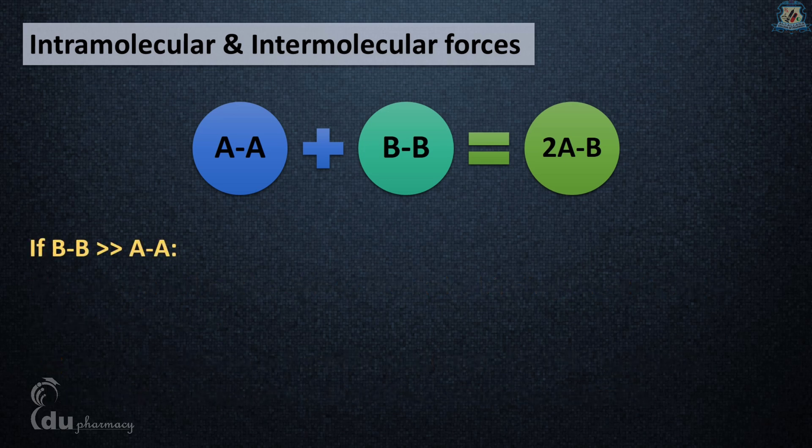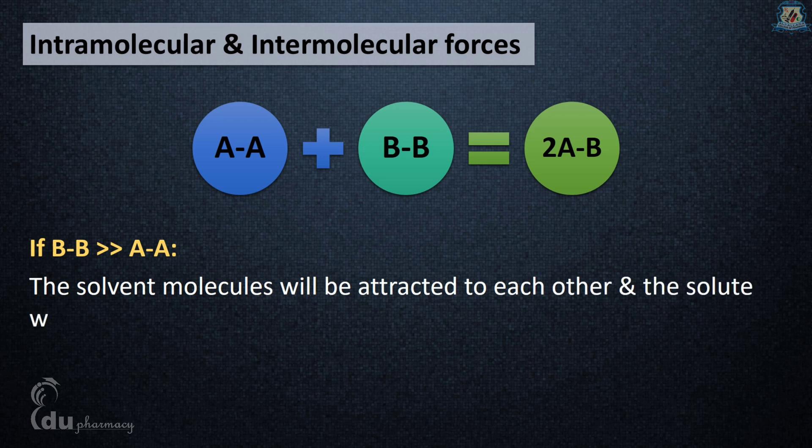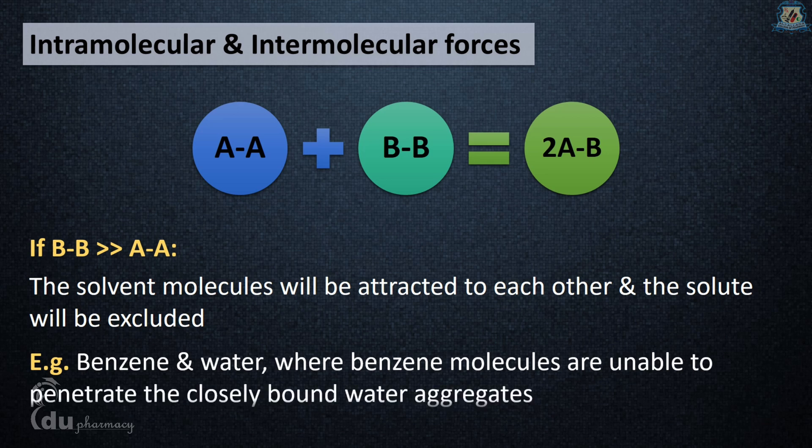Second condition: if BB is much greater than AA, the solvent molecules will be attracted to each other and the solute will be excluded. For example, benzene and water—benzene molecules are unable to penetrate the closely bound water aggregates, decreasing the chances of solvation.